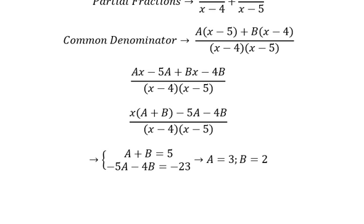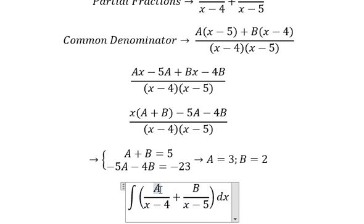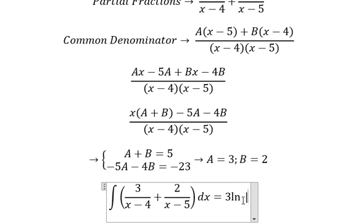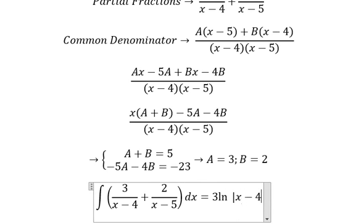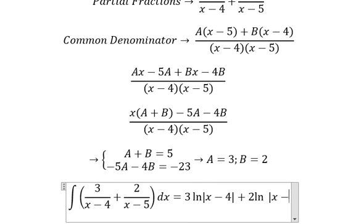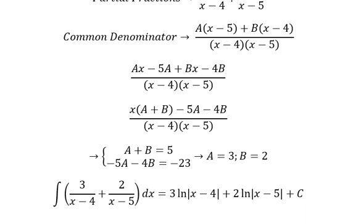A is about number 3, B is about number 2. And this one we get 3 times ln of the absolute value of x minus 4 plus 2 times ln of the absolute value of x minus 5, and we put C here. That's the end, thank you for watching.